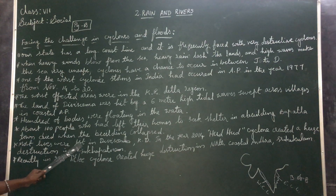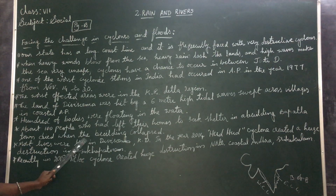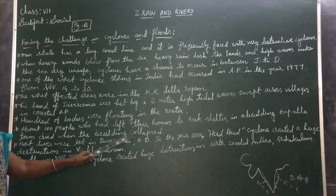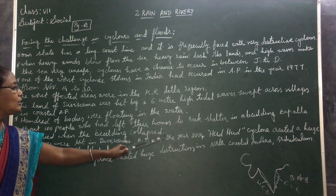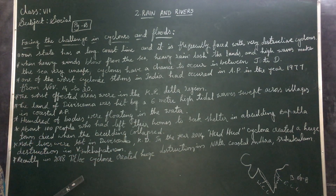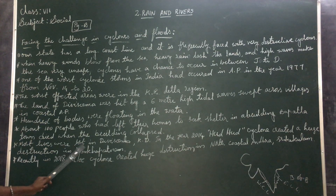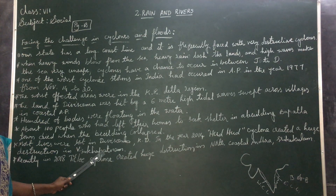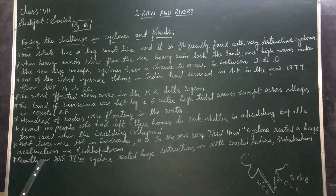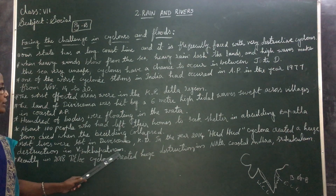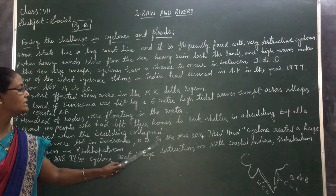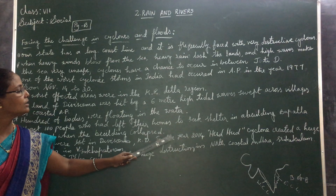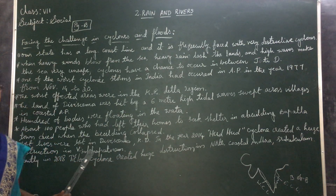Most lives were lost in Divisima, Krishna district. In the year 2014, Hudhud cyclone created huge destruction in Visakhapatnam. Recently, in 2018, Titli cyclone created huge destruction in North Coastal Andhra, Srikakulam.